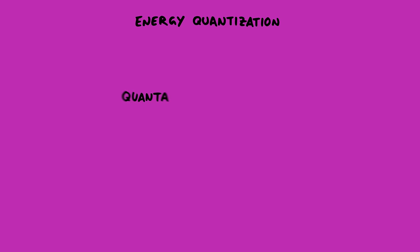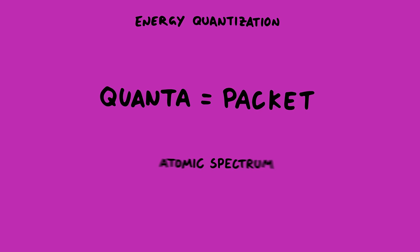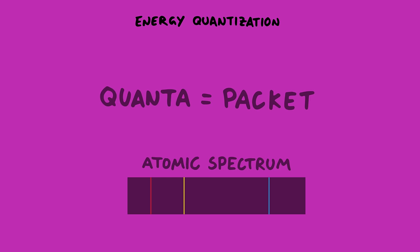And finally, where does the name quantum come from? Well a quanta is a packet of something, like a chunk of something. And one of the first quantum effects people saw were atomic spectra, which is where atoms give off light with specific discrete energies. It works like this.